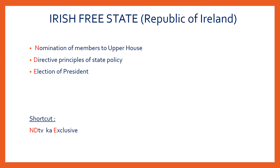The next one is the Irish Free State, i.e. the Republic of Ireland. The features borrowed are: nomination of members to the upper house, directive principles of state policy, and election of president. The shortcut to remember is 'NDTV ka exclusive' — N for nomination of members to the upper house, D for directive principles of state policy, and E for election of president.